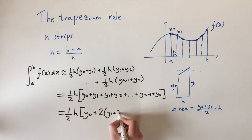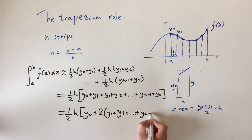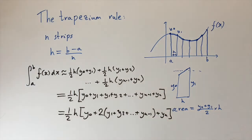So we can actually write this as a half times h times y0 plus two times all the middle terms, so y1, y2, dot dot dot, up to yn minus 1, and then add on the last term, yn. And this is it. This is the trapezium rule.